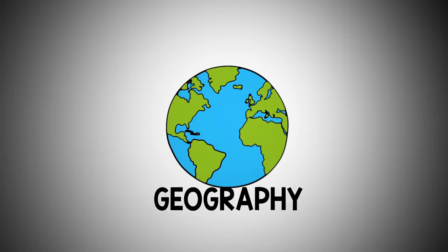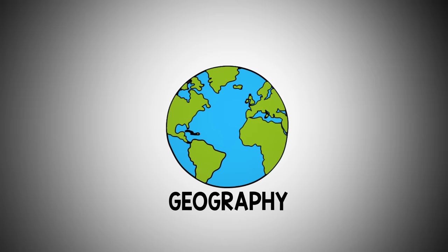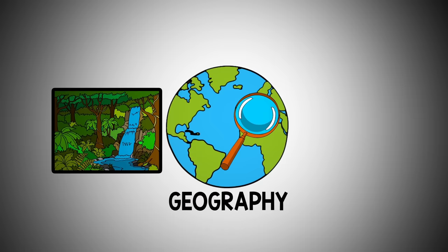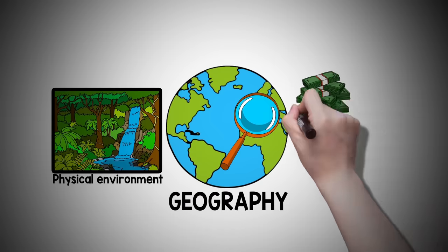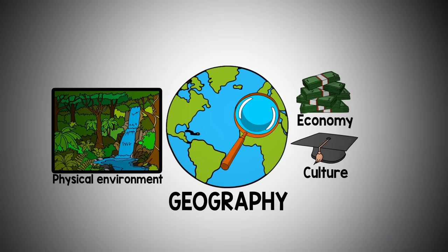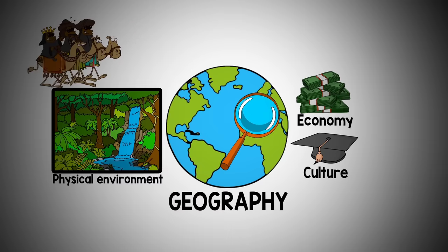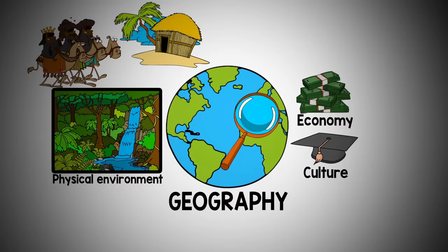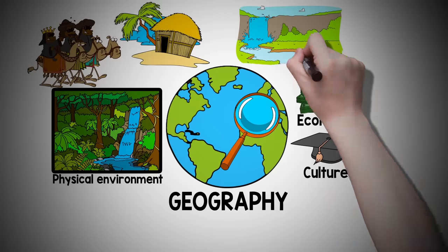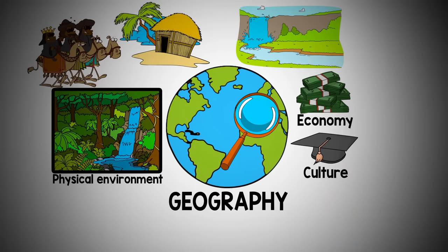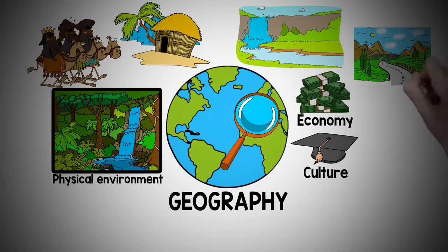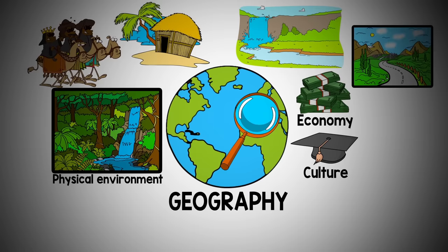The word geography, through a historian's lens, means the physical environment and how it may influence an economy and culture. Some examples may include scorching deserts that encouraged nomads to move between water sources, islands where the surrounding ocean offered a food source, flooding rivers that created fertile farmland, and mountains where a resource like timber was used for building.